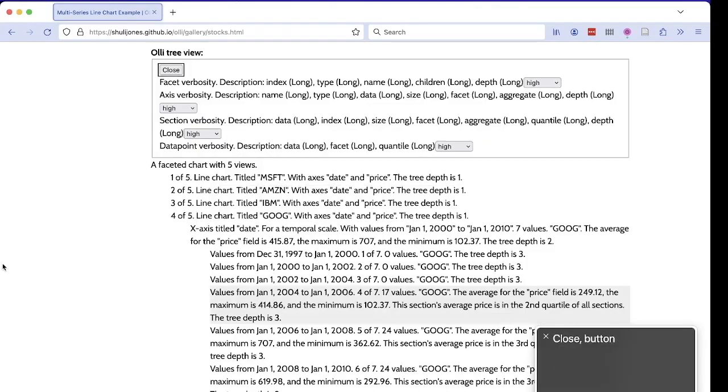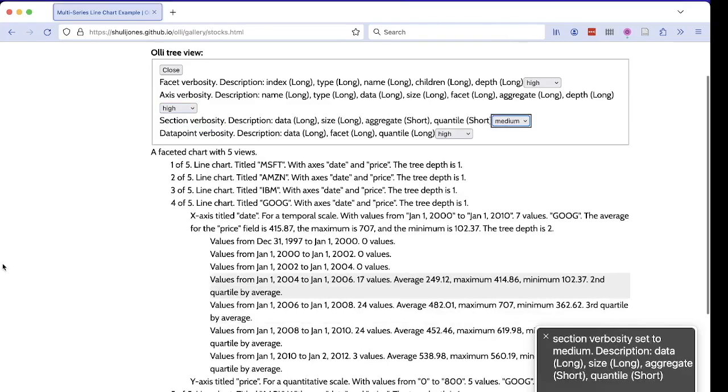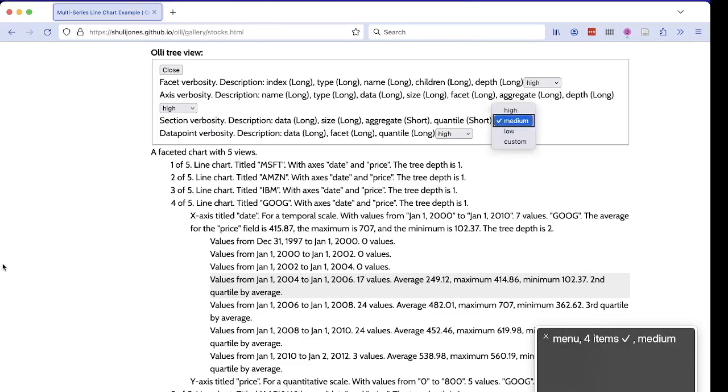When I open the settings menu, it lets me set a different length or verbosity for each level of the hierarchy. As a more novice user, maybe I just want to shorten the text up a bit overall. I can do that by changing a level's verbosity to low or medium. The corresponding text will change immediately. If I'm a more experienced user, I might instead choose to make my own custom setting for a particular level.